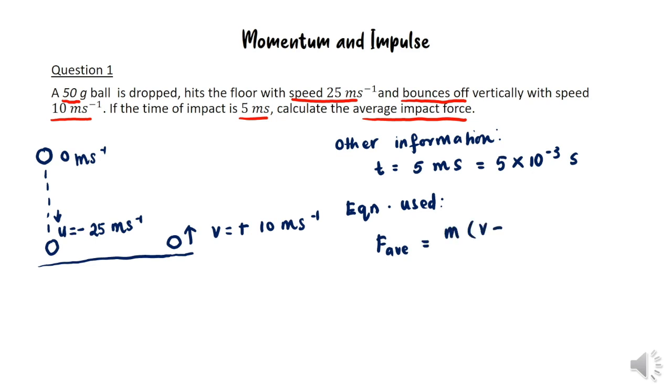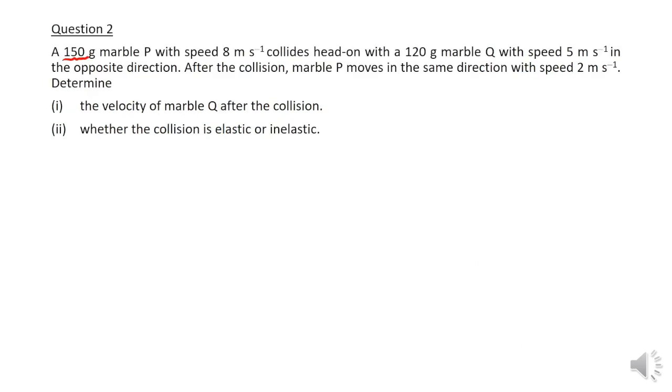We can apply the equation for average impact force, that is M times (V minus U) over T. This actually refers to the equation of impulse. Substitute all the information given and we get the answer to be 350 newtons.